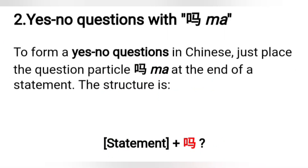The second part of this lesson is yes-and-no questions with 'ma.' To form a yes-or-no question, just place the question particle 'ma' at the end of a statement. The structure is fairly simple: the statement, and then the word 'ma.'